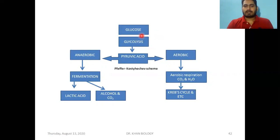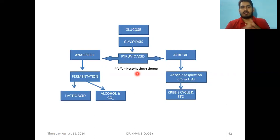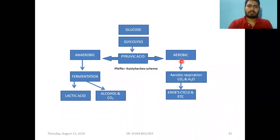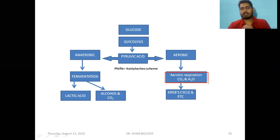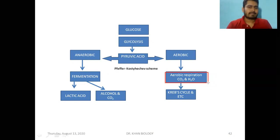If there is a breakdown in cytoplasm, the product is pyruvic acid. Now if an organism is in an oxygen-rich aerobic condition, this organism will undergo complete combustion or complete breakdown of pyruvic acid, producing carbon dioxide and water and releasing a lot of energy.